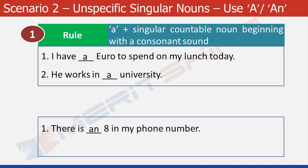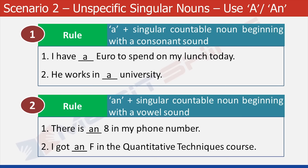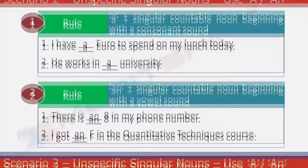Again, the emphasis should be put on the sound. Try this one: I got dash F in the quantitative technique course. It sounds like 'ef', and hence we would need article AN. So we have learnt that a singular countable noun beginning with a vowel sound would take AN.